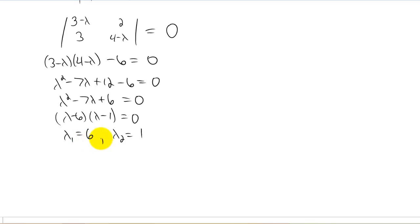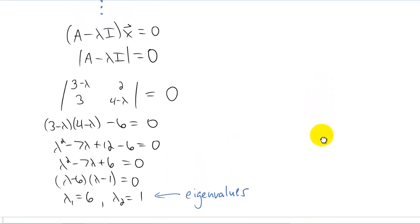I'll call lambda 1 equals 6, I'll call lambda 2 equals 1, and I don't actually remember if we used this vocabulary in class, but these two values for lambda, these are called the eigenvalues.